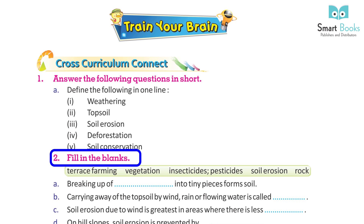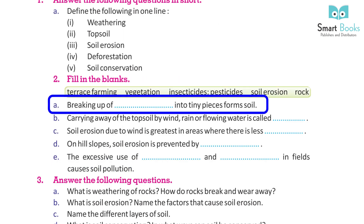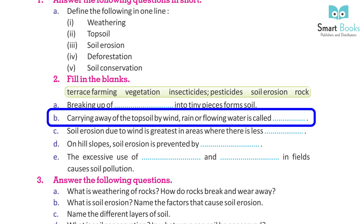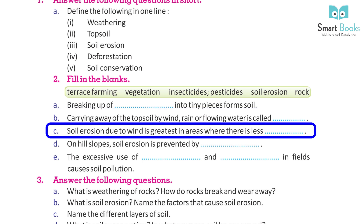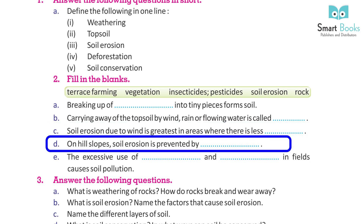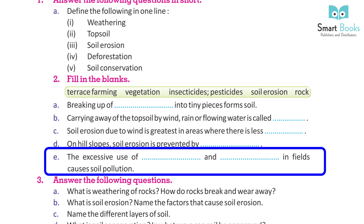Fill in the blanks: A. Breaking up of ___ into tiny pieces forms soils. B. Carrying away of the topsoil by wind, rain, or flowing water is called ___. C. Soil erosion due to wind is greatest in areas where there is less ___. D. On hill slopes, soil erosion is prevented by ___. E. Excessive use of ___ and ___ in fields causes soil pollution.